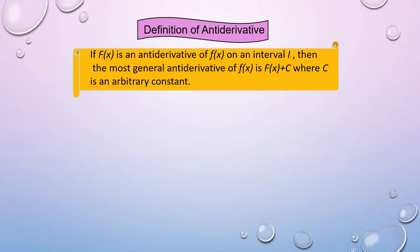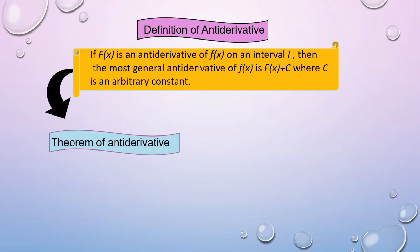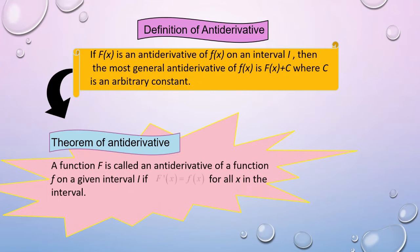First, the definition of antiderivative: if F(x) is an antiderivative of f(x) on an interval I, then the most general antiderivative of f(x) is F(x) plus C, where C is an arbitrary constant. Theorem of antiderivative: a function F is called an antiderivative of a function f on a given interval I if F′(x) equals f(x) for all x in the interval.